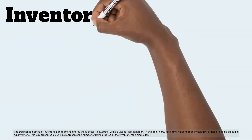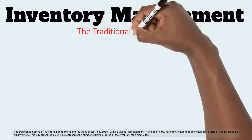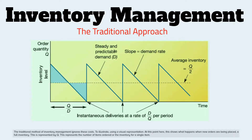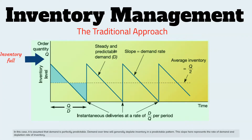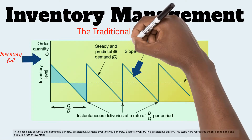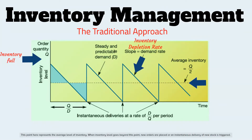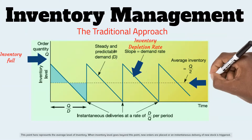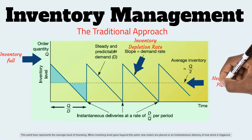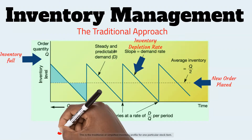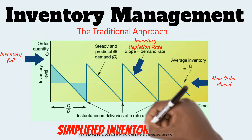The traditional method of inventory management ignores these costs. Using a visual representation, at this point here, this shows what happens when new orders are being placed — a full inventory, represented by Q, which represents the number of items ordered for a single item. It is assumed that demand is perfectly predictable, and demand over time will generally deplete inventory in a predictable pattern. This slope represents the rate of demand and depletion rate of inventory. This point represents the average level of inventory; when inventory goes beyond this point, new orders are placed or an instantaneous delivery of new stock is triggered. This is the traditional or simplified inventory profile for one particular stock item.